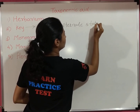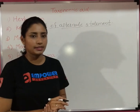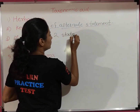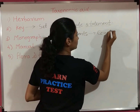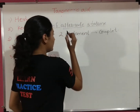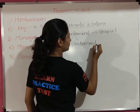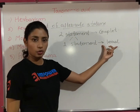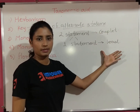Let's look at an example. Suppose two statements are given. These two statements collectively are called a couplet. An individual statement is known as a lead. So one individual statement is a lead, and two statements together we call a couplet.